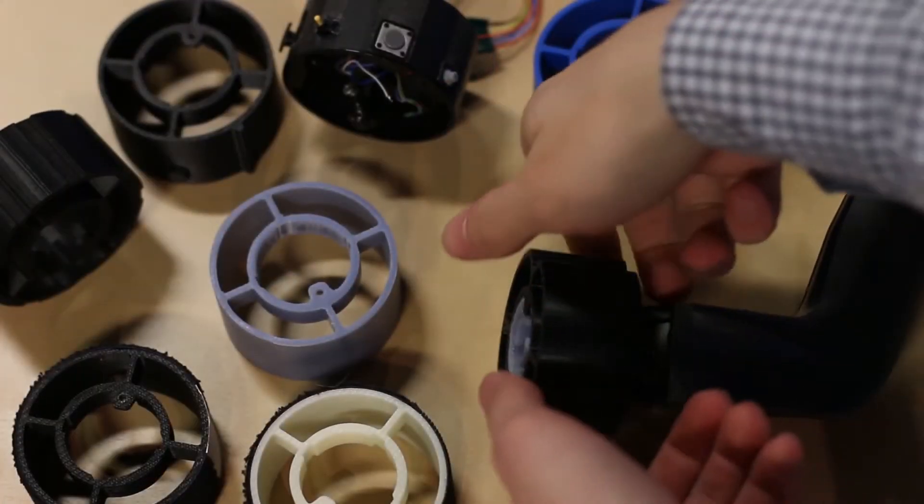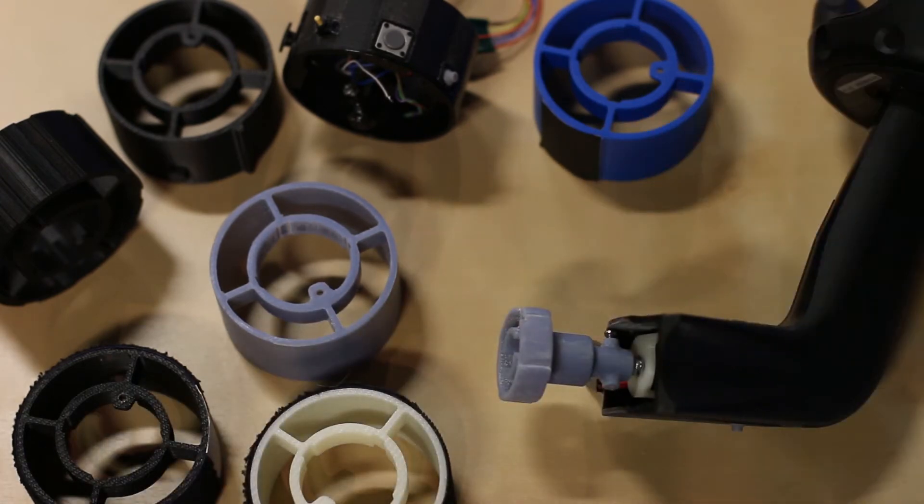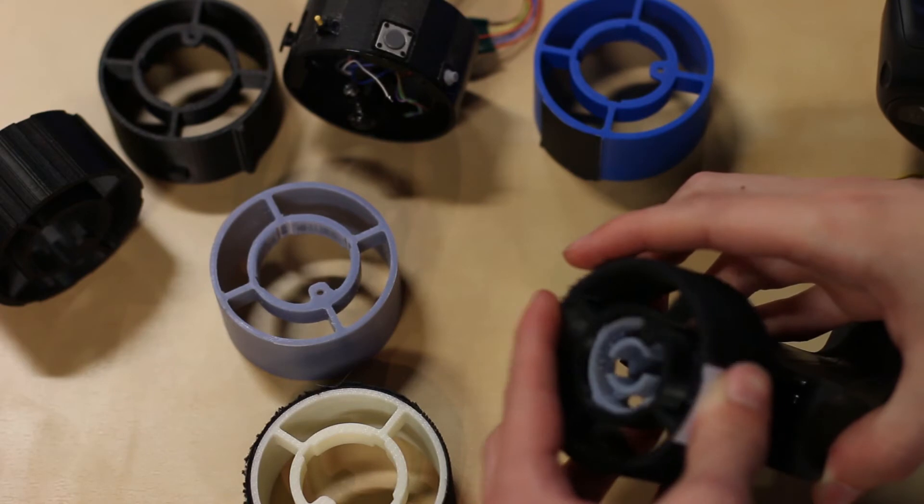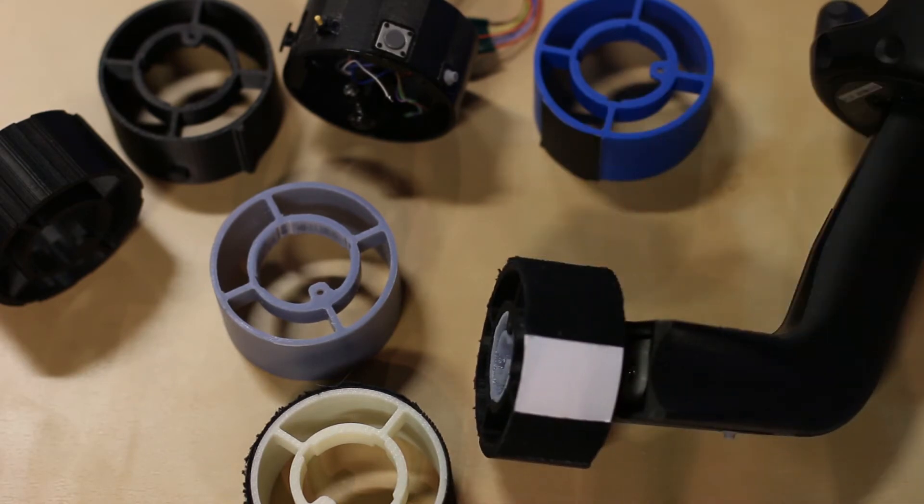The haptic wheels are interchangeable and can contain different haptic elements, such as shapes, textures, or active electronic components. Wheels can also be custom designed for different applications.